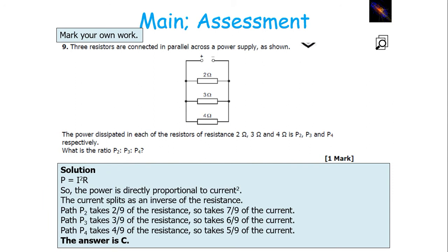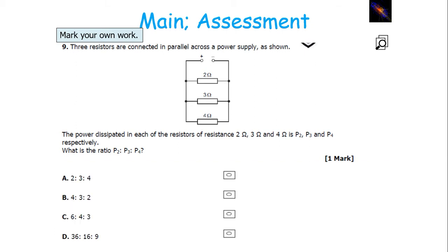We know that power equals I squared R, so the power is directly proportional to current squared, and the current splits as an inverse of resistance. On path 2, there's 2 ninths of the resistance, so 7 ninths of the current. Path 3 has 3 ninths of the resistance, so 6 ninths of the current. Path 4 has 4 ninths of the resistance, so 5 ninths of the current. Looking at the ratio, the answer is C.